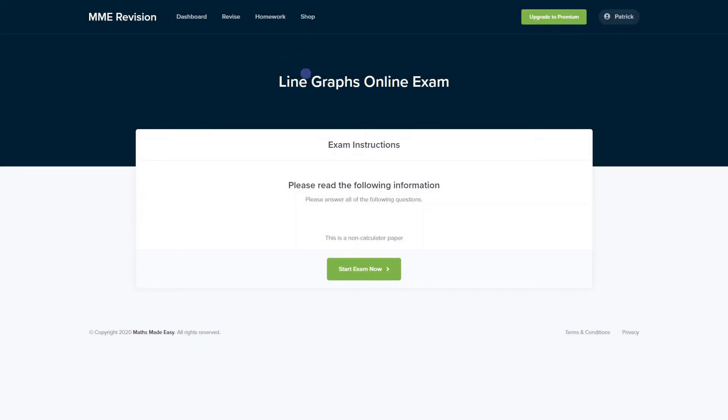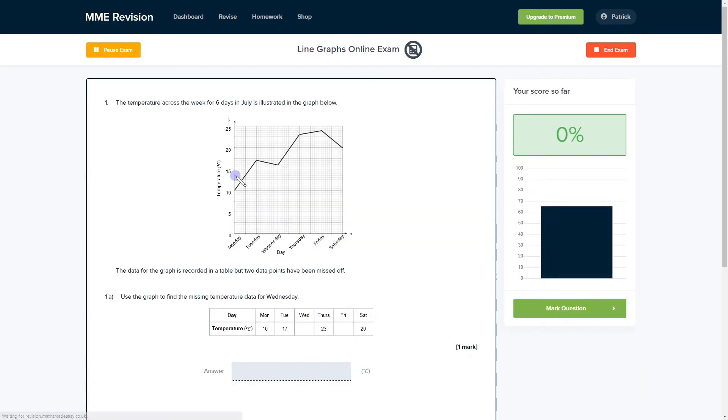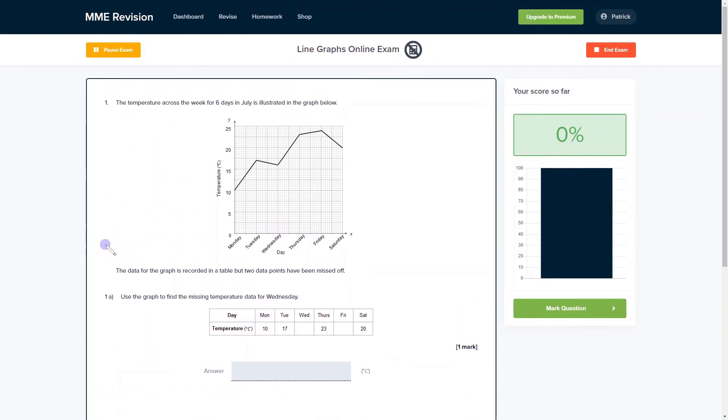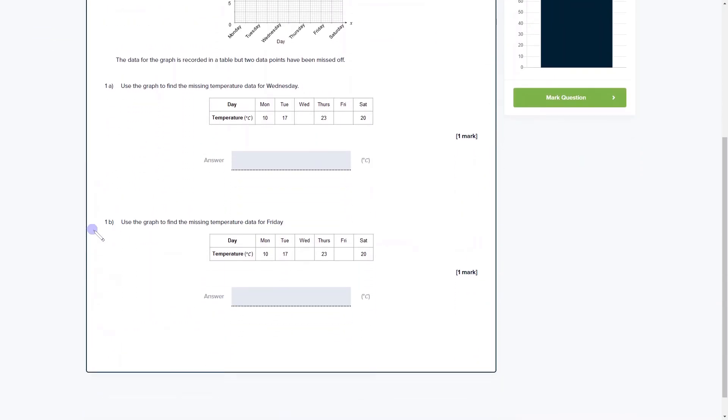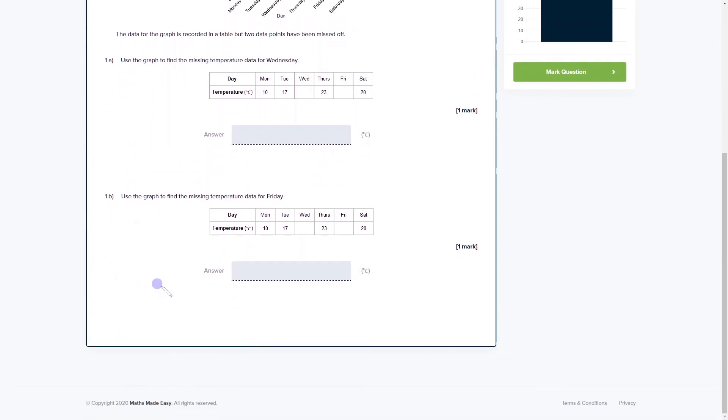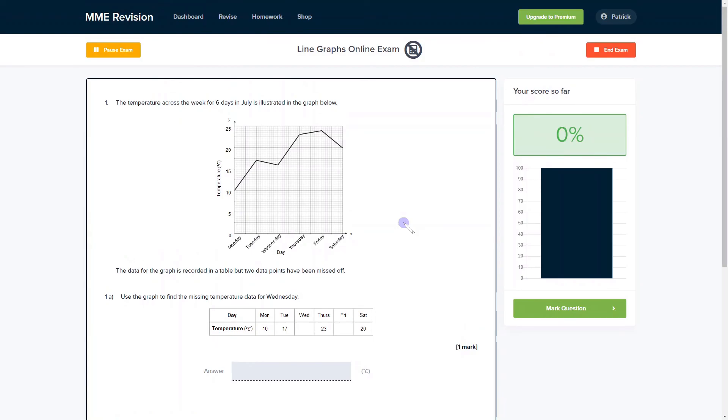If you want to test your strength on the line graphs topic, then why not do our online exam? It's available through our revision platform. If you take the test, you'll find loads of different questions to have a go at. There's a variety of different question types as well, and you receive instant feedback on everything, so you'll be able to work out where you're going wrong and see the work solutions as well. If you're interested, you can click the link below and it will take you straight there.